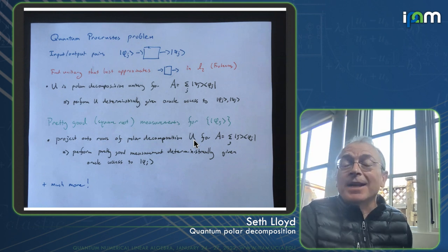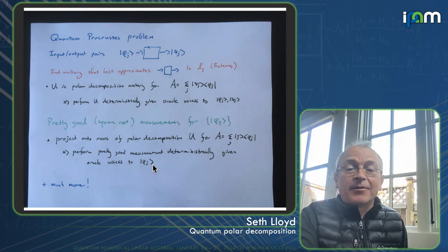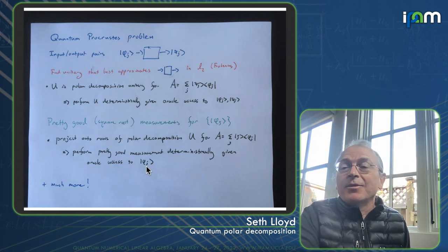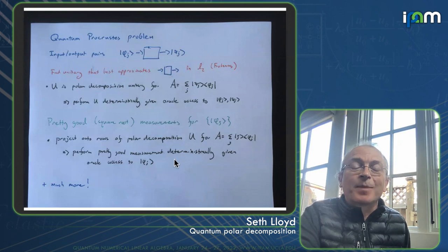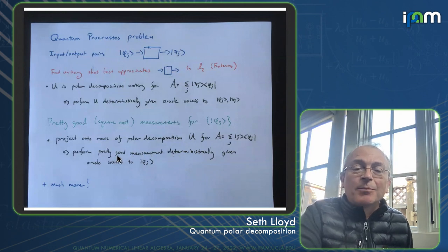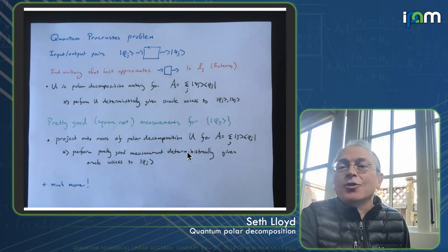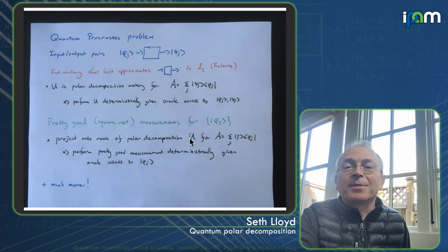What is a pretty good measurement? It turns out that it's a von Neumann measurement, which is a projector onto the orthogonal, orthonormal rows of this polar decomposition unitary. And that's fine, because actually we can, once again, given oracular access to the phi j, then we can use a variety of techniques, and please look at the paper for the methods, to perform this pretty good measurement deterministically. It's simply a rather straightforward extension of being able to implement the unitary of the polar decomposition.